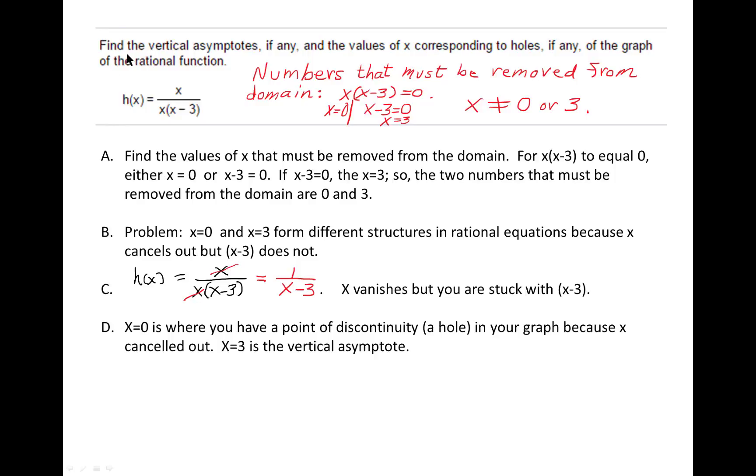Okay, here's a problem. Find the vertical asymptotes, if any, and the values of x corresponding to holes, if any, of the graph of the rational function h(x). h(x) equals x over x times (x minus 3). Notice the denominator has already been factored for us.